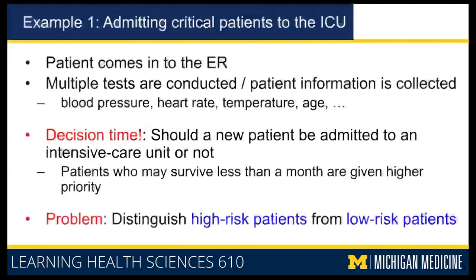The logic for admitting somebody to the ICU is that if the patient can survive only for less than a month, they get higher priority to be admitted to the ICU. So the classification problem is to identify those high-risk patients from low-risk patients. You are grouping patients walking into the ER as either high-risk or low-risk — a classification task with two possible outcomes, two possible labels.